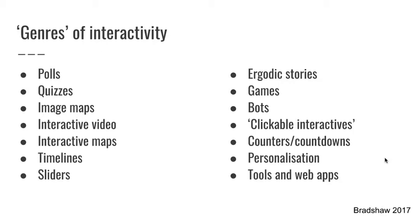An image map on the other hand is much more complex. This is where you might take an image such as a group of people or a picture of a particular situation and the user is able to roll over or click on different parts of that image to get different pieces of information. It might be, for example, an image of the characters from a story or a particular location in that story.